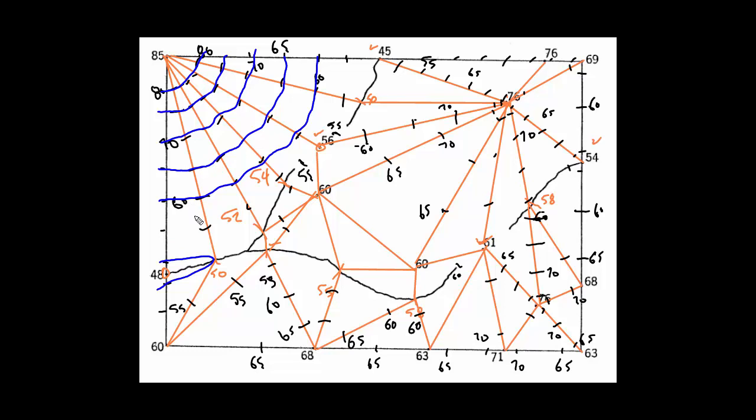I just drew the 60 contour here and let's start talking about the 55. Now the 55 is going to cross this stream right there and right there, but it's not going to connect through, and it comes back around here. And it's going to cross this stream too. And it's going to come back out right there.